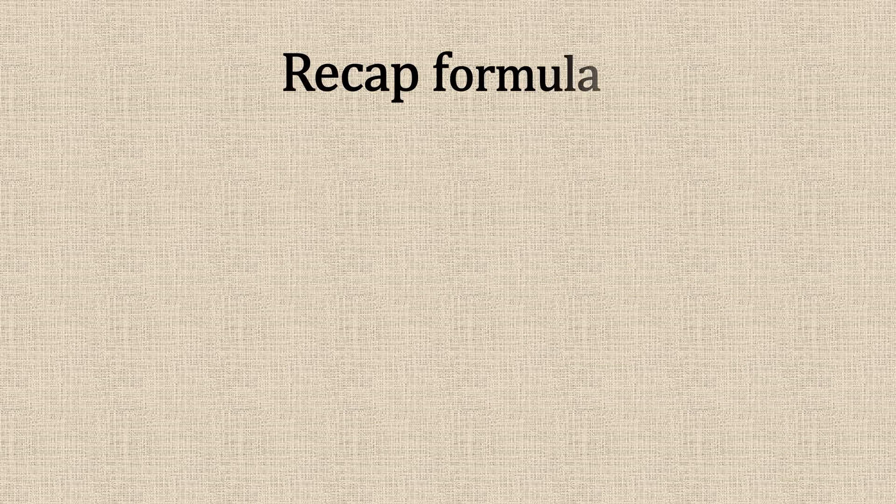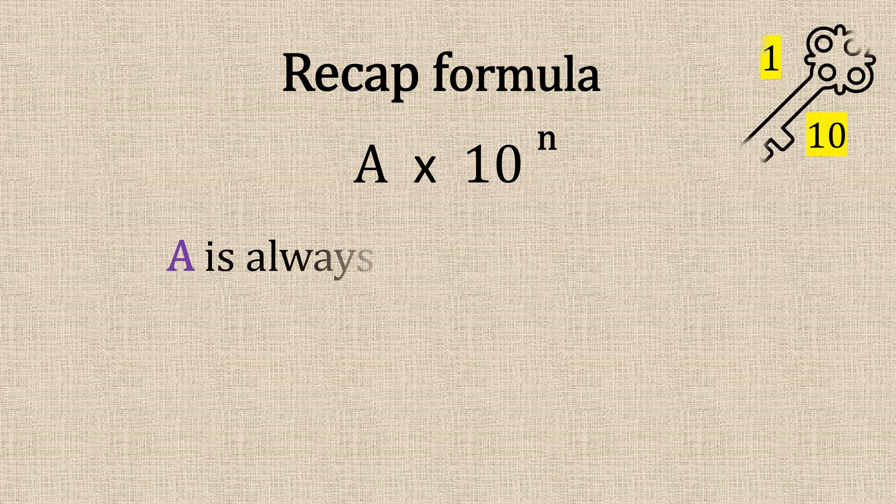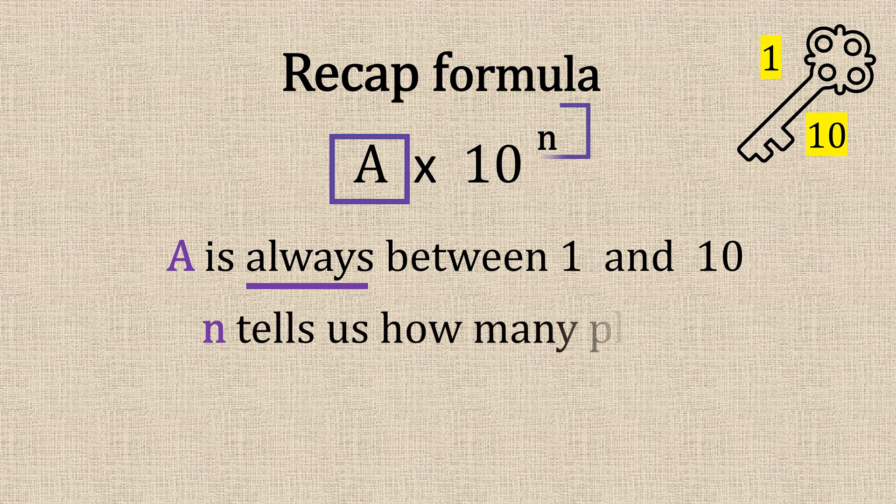Quick recap on the formula for standard form: A times 10 to the power of n. Now A is always between 1 and 10, not including 10, and n tells us how many places to move the decimal.